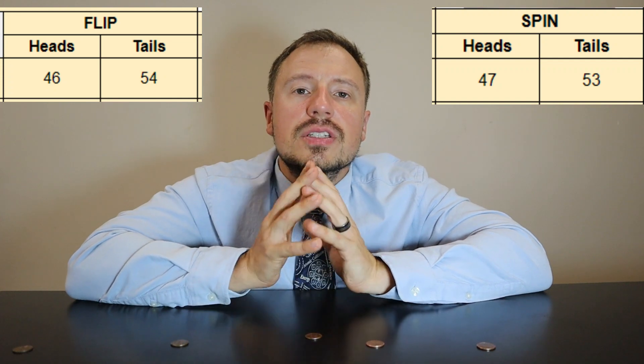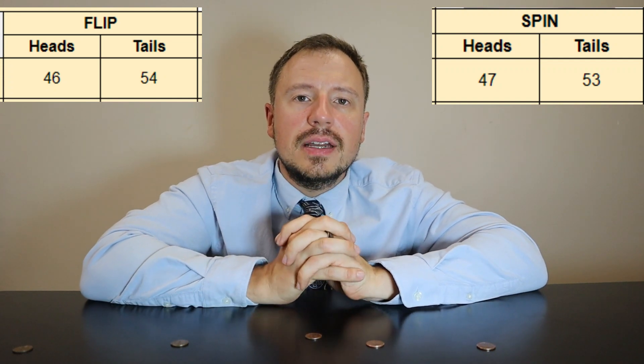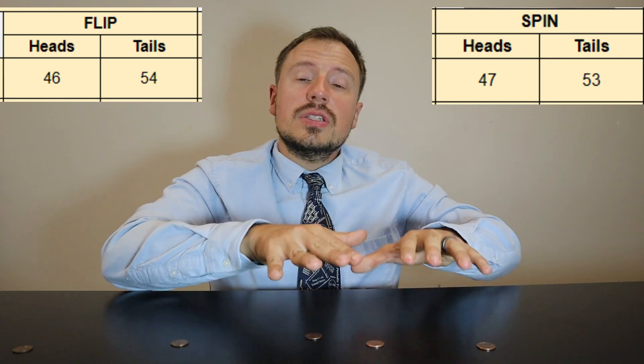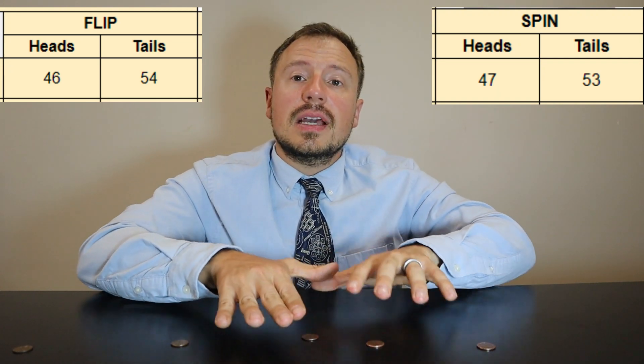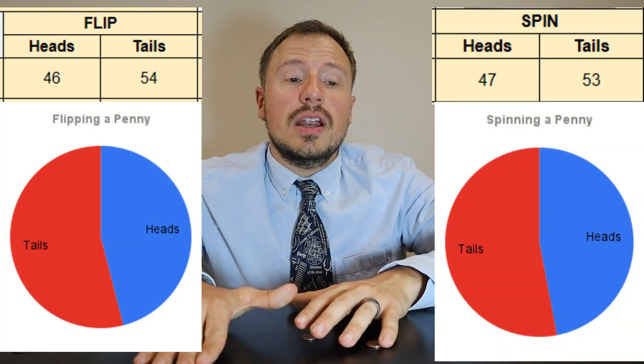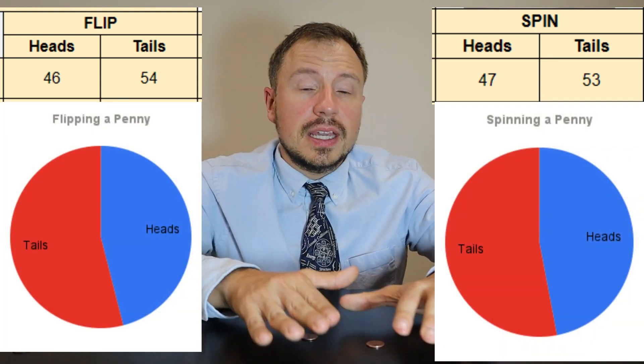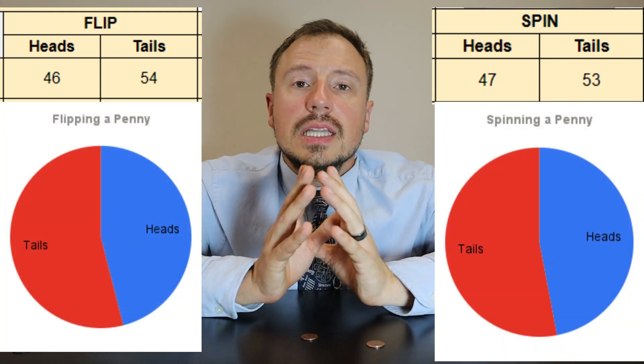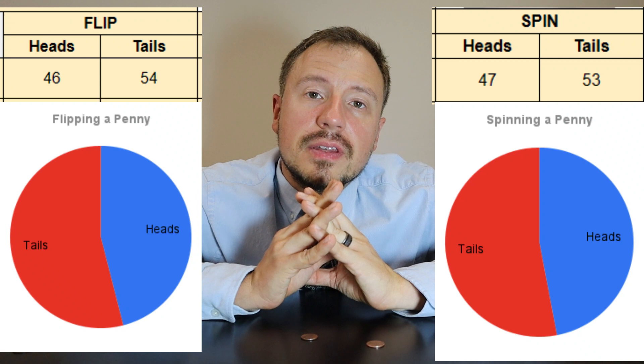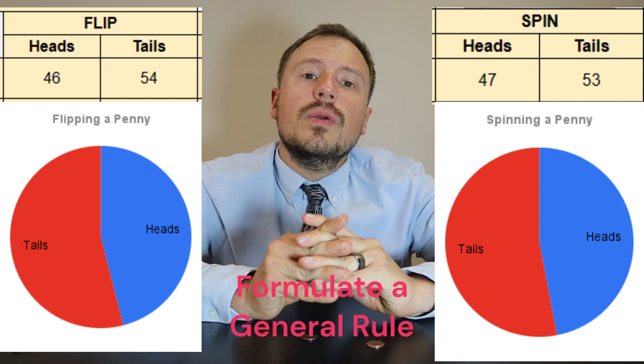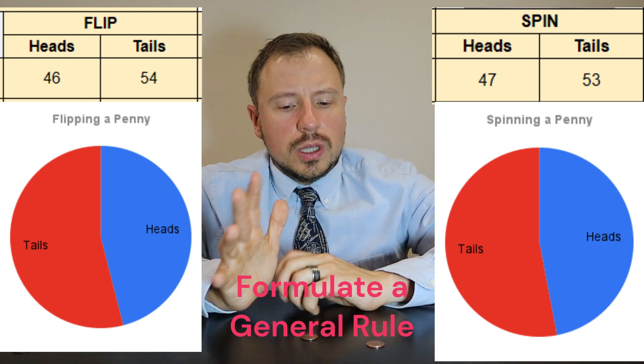I can do this for a hundred spins and record whether they land heads or tails. Now that we've done that, I can put the sample data up for you. We can use the data to make a nice pie chart for each scenario — for flipping and for spinning the pennies.